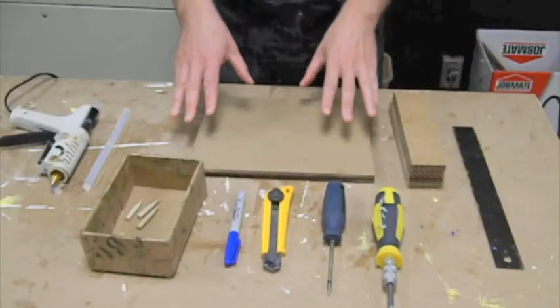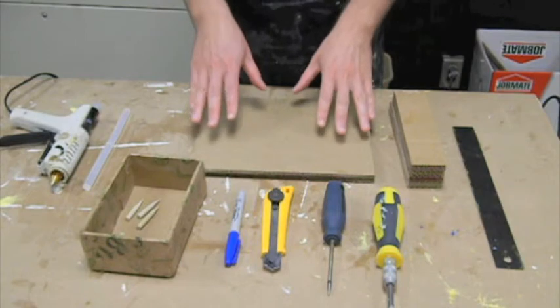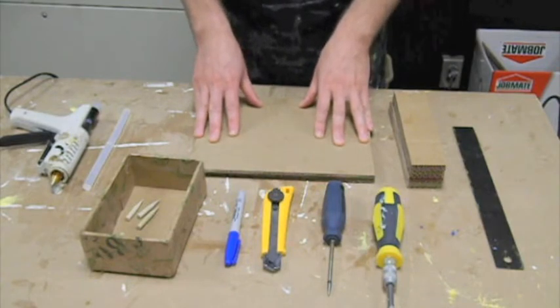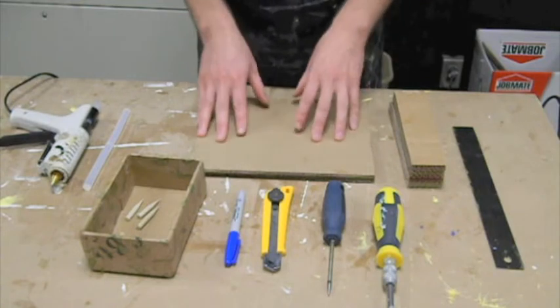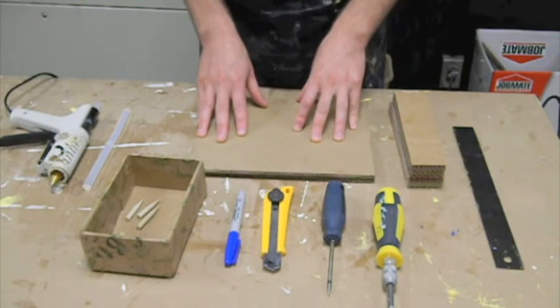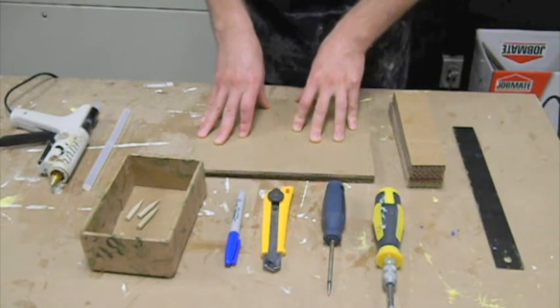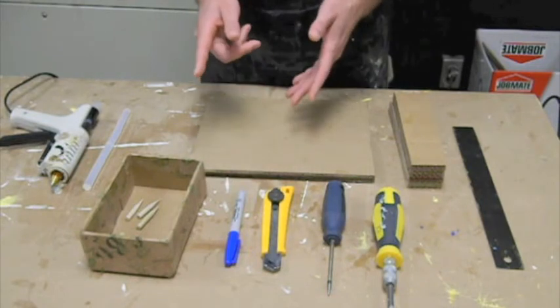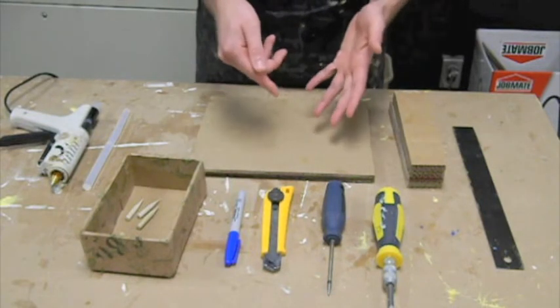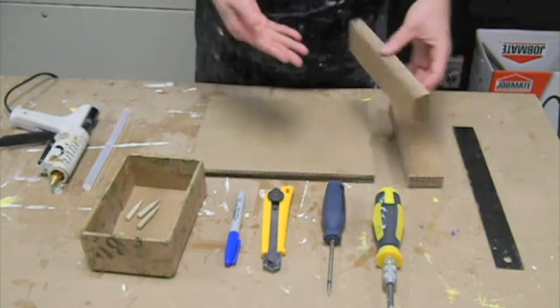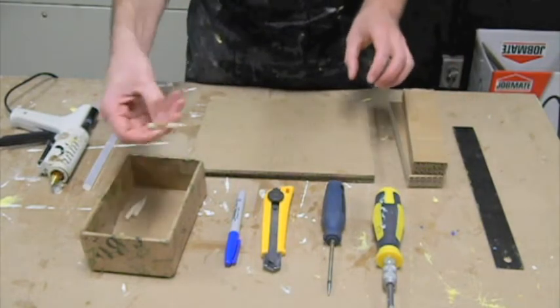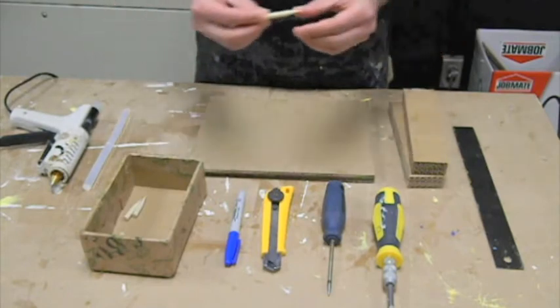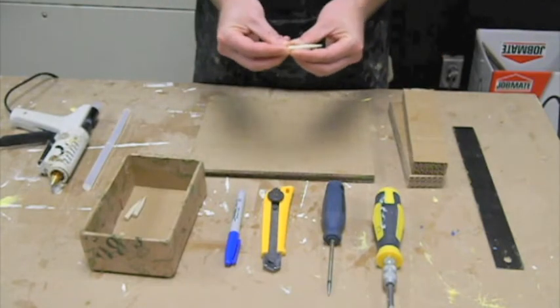Hey everyone. So in this instructional video, I am going to demonstrate a couple of different techniques that we use in adaptive design that we learned from the Adaptive Design Association down in New York City. One is inserting a piece of cardboard into another piece of cardboard, and the other is using dowel nails to attach and reinforce those pieces.